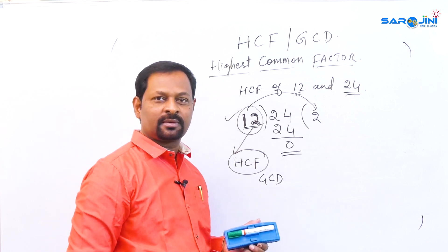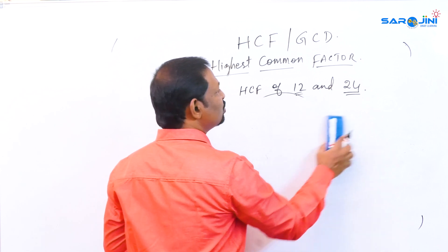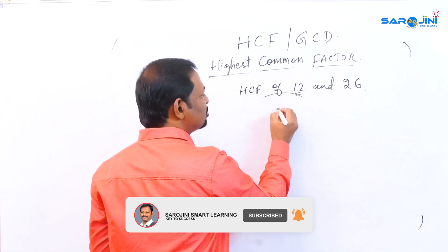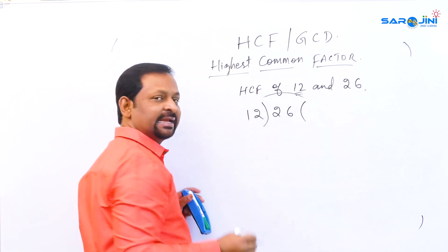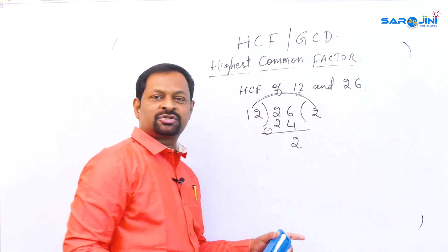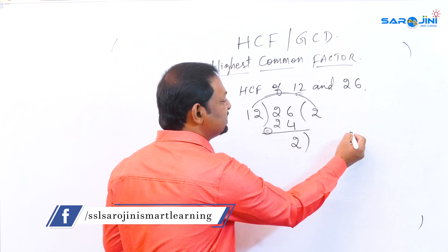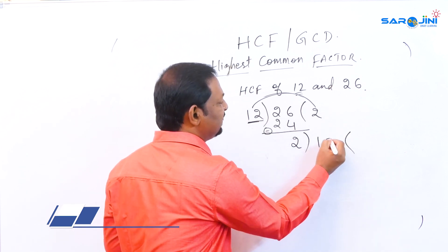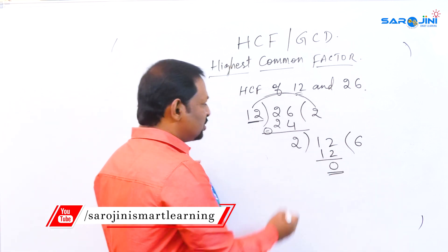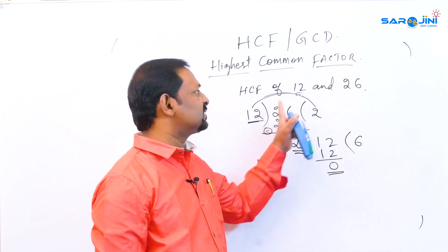Suppose the numbers are 12 and 26. The bigger number 26 is divided by 12. 12 times 2 is 24, so the remainder is 2. Since the remainder is not 0, the process is incomplete. Now the old divisor 12 becomes the new dividend, and the remainder 2 becomes the new divisor. 2 times 6 is 12, remainder is 0. So the HCF of 12 and 26 is 2.